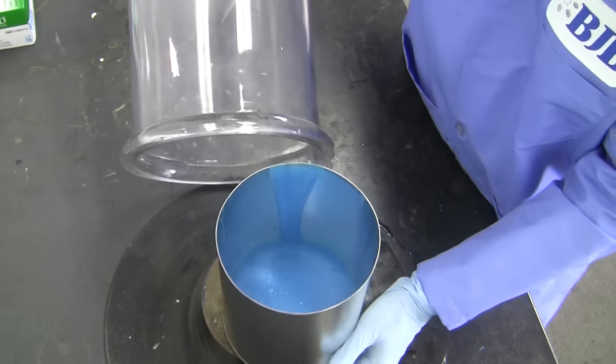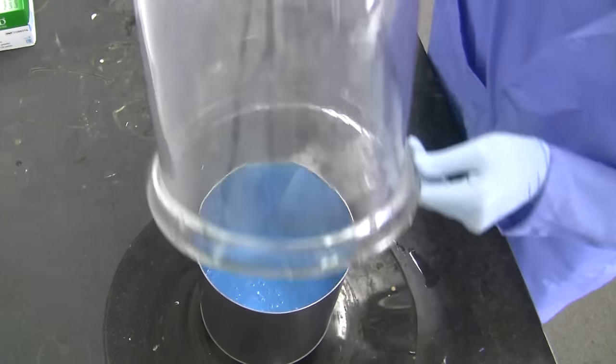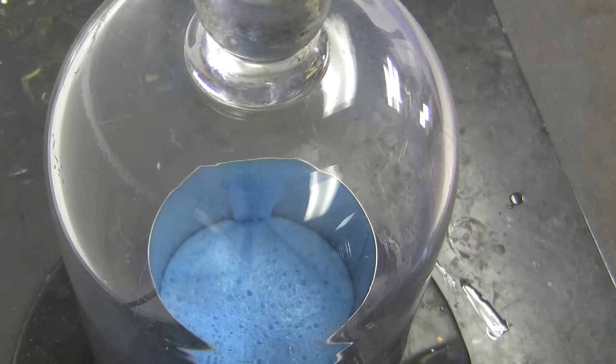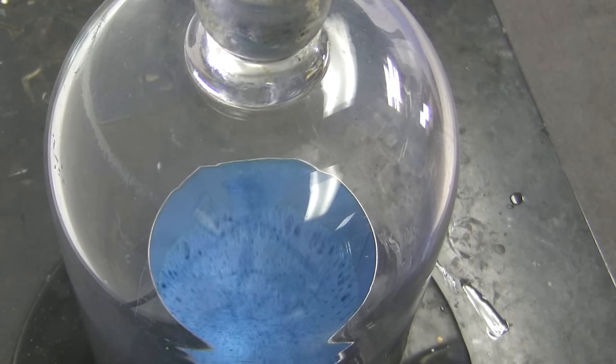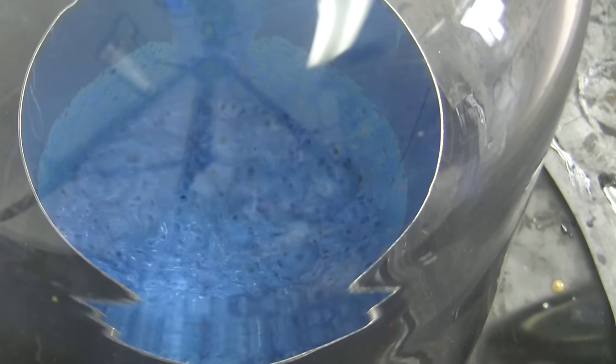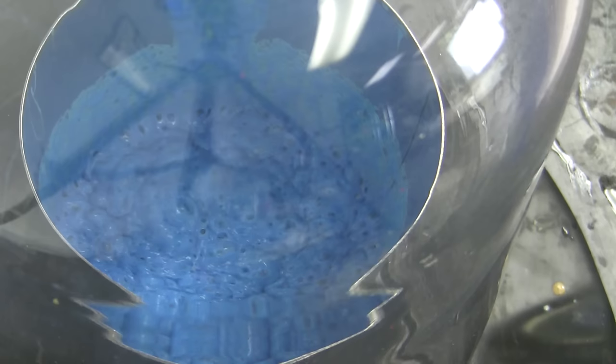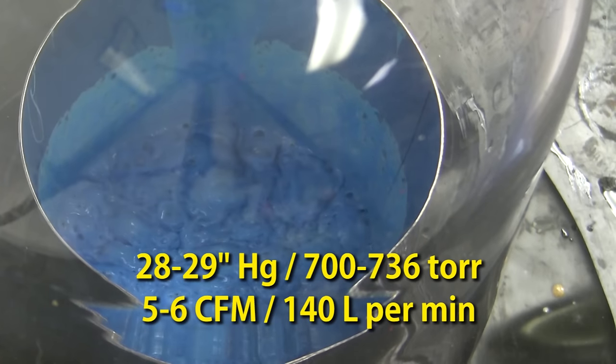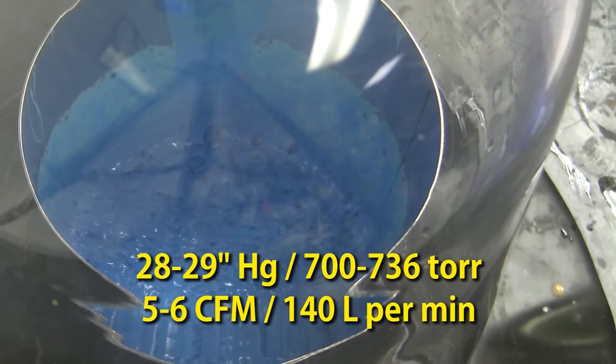Once mixed, we'll place our container in our vacuum chamber to extract out the trapped air bubbles. TC5024 is fairly low in viscosity and could potentially just be mixed and poured, but your mold would likely have air bubbles and potentially cause imperfections in the mold surface and decreased tear strength in the cured rubber. Note that our pump is capable of pulling 28 to 29 inches of mercury and is a minimum of 5 to 6 CFM.